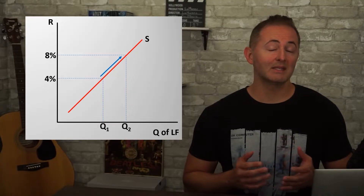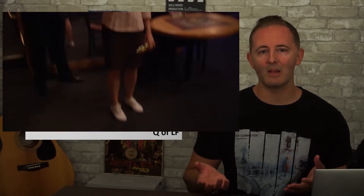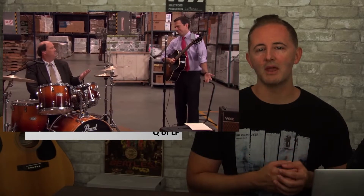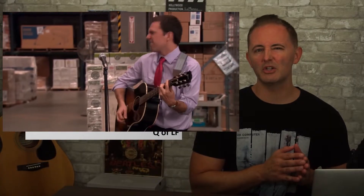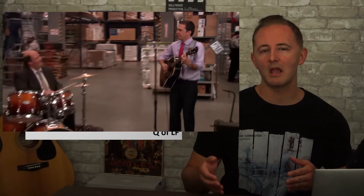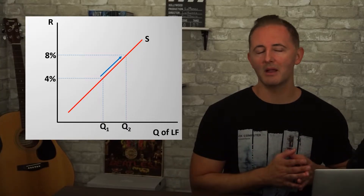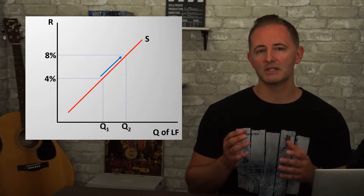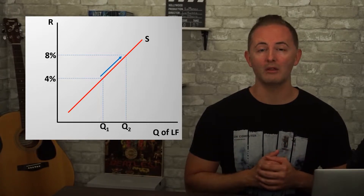From an economist's perspective, saving and lending is the same thing. Suppose that Pam saves $1,000 at her local bank and Kevin borrows $1,000 from that bank to buy a new drum kit. The bank is the lender, but really they're just an intermediary — it's like Kevin is borrowing Pam's money. The major function of banks is bringing together savers and borrowers in an efficient way.